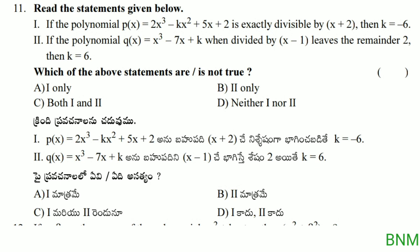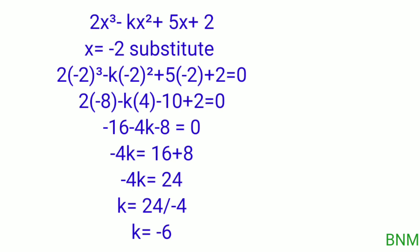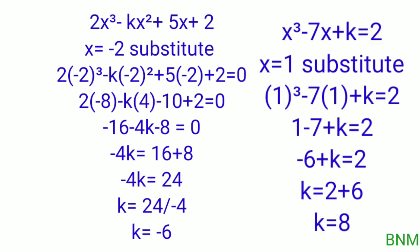Next: 2x cubed minus kx squared plus 5x plus 2 is exactly divisible by x plus 2. Then k equals? Setting x plus 2 equal to 0 gives x equal to minus 2. Substituting: 2 times (minus 2)³ minus k times (minus 2)² plus 5 times (minus 2) plus 2 equals 0. That gives minus 16 minus 4k minus 10 plus 2 equals 0, so minus 4k equals 24, and k equals minus 6. So the first statement is true.